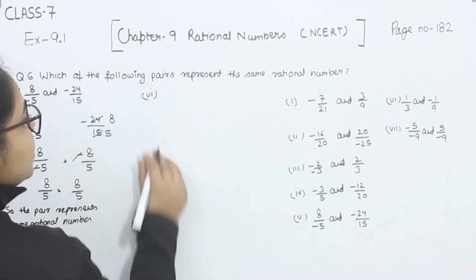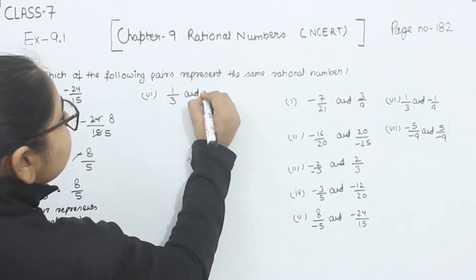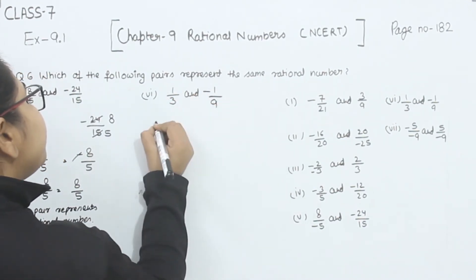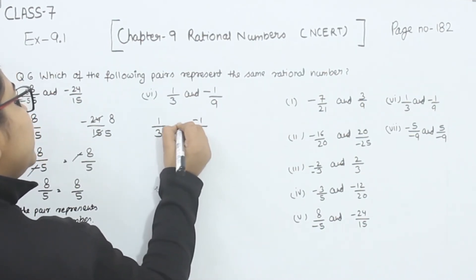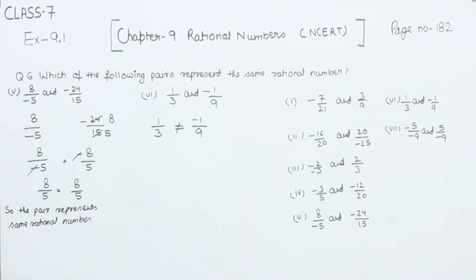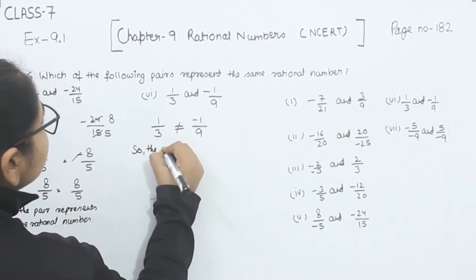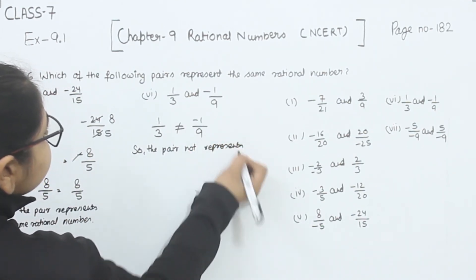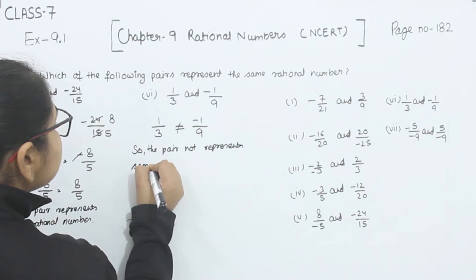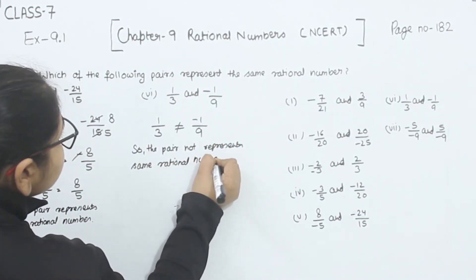Now comes part 6: 1 by 3 and minus 1 by 9. We have 1 by 3 and minus 1 by 9 — they are not equal, and they are already in their simplest form. The given pair does not represent the same rational number.